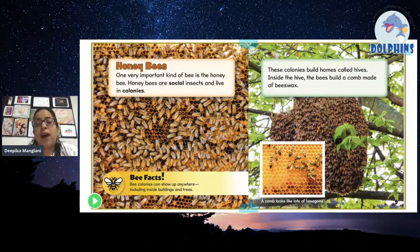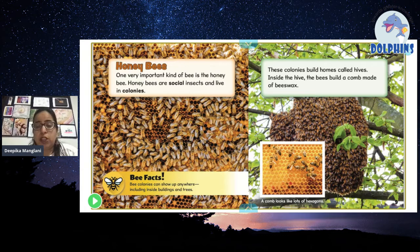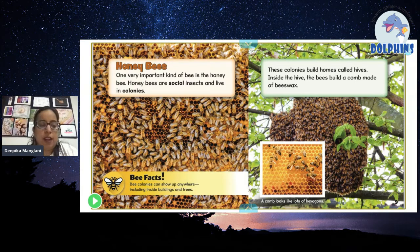You must have seen a lot of honeybees near your house. It is a big insect. In Hindi, bees are called madhumakhi. So let us understand — the big insect, the madhumakhi that you see — let's find out more about it. One very important kind of bee is the honeybee.